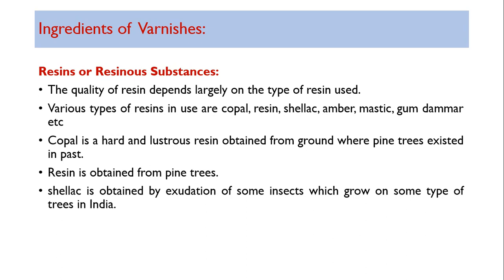Resins are resinous substances and the quality of varnish depends largely on the type of resin used. Resins are granules obtained from trees. Various types of resins in use are copal, resin itself, shellac, amber, mastic, and gum dammar. Copal is a hard and lustrous resin obtained from ground where pine trees existed in the past.